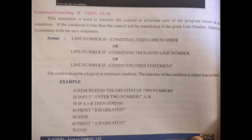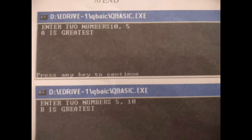This is the concept of If, Then, Else. It is used to transfer control to a different part of the program based on the condition. If the condition is true, the control will be transferred to the given line number. Otherwise, it continues with the next statement. You can see the output — it will ask for two numbers. It will find which is greatest and print 'A is greatest' or 'B is greatest'. The computer checks the condition and the corresponding output is displayed.